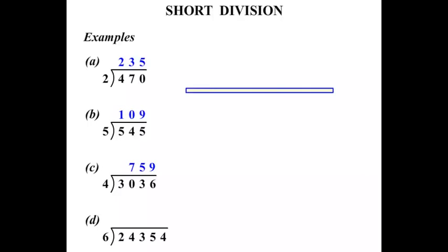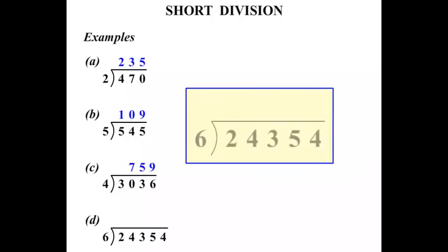Okay, the next one. Much bigger numbers. They're getting bigger. But the process is exactly the same. So we start 6 into 2. Well, it won't go. 6 into 24 goes 4 times exactly.